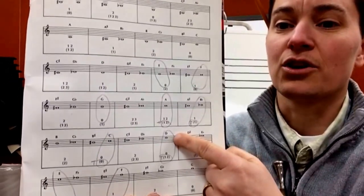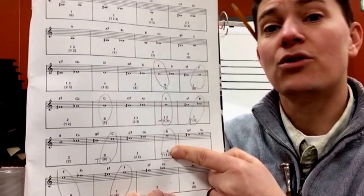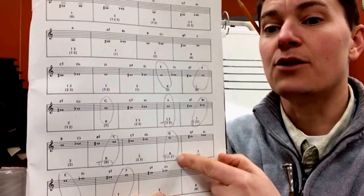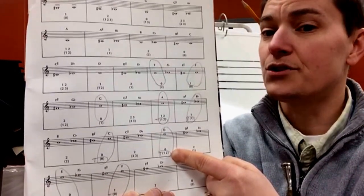So, for instance, we're going to look here at the high D. If you have a single horn, you're going to play that with no fingers. If you have a double horn, you're going to play that with thumb, one, two.